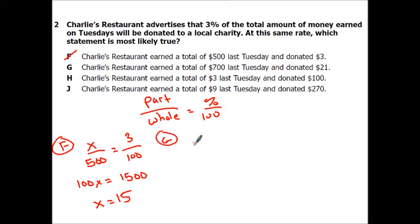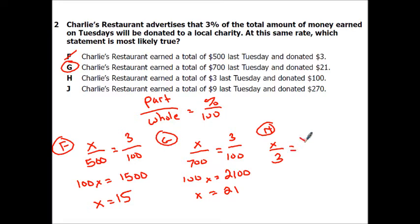For G, we're going to go x over 700 equals 3 over 100. So this is going to be 100x equals 2,100 divided by 100, x equals 21. So there you go, we got 21. If we were to do H, it would be x over 3 equals 3 over 100, which would be 100x equals 9, which would be 0.09. So that would be 9 cents. And this one would be 27 cents. So G would be your answer on that.